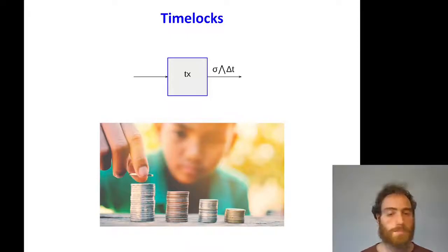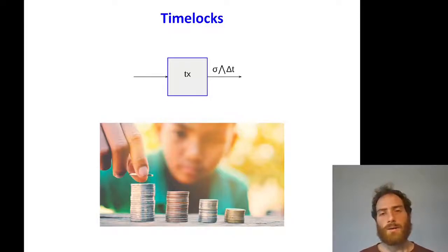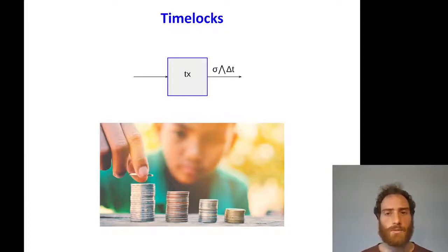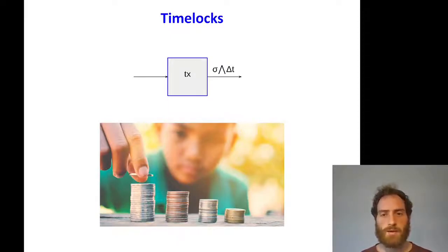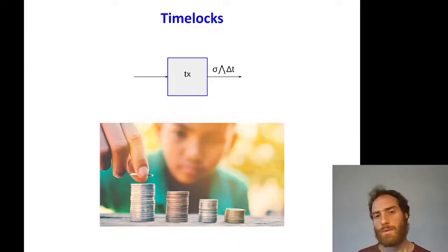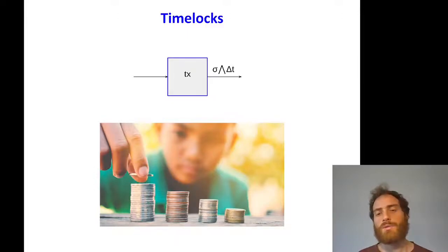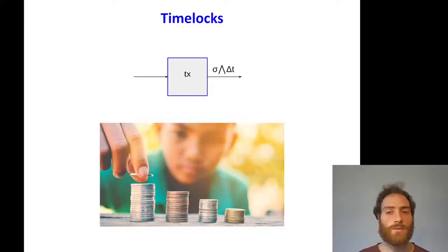Why would one want to lock their coins? An example is when a parent wants to create a savings account for their child. They transfer the money to an output that is time-locked far into the future so that they themselves cannot use the money. This toy example is not fully robust because you would want some way to get your money back, and security from losing the keys — if you put the time-lock too far into the future, it is quite possible that one loses the keys.